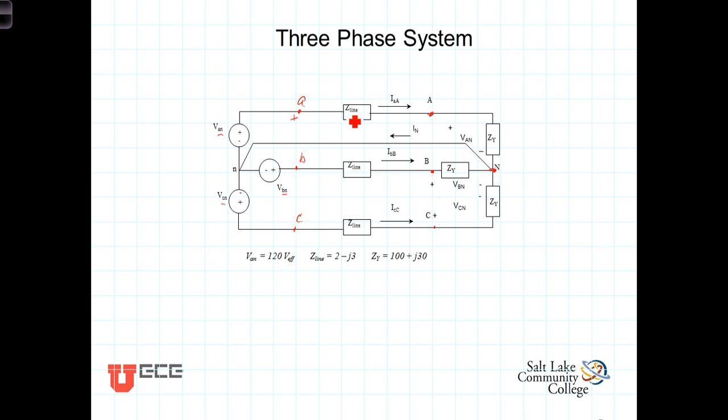The line currents, the currents flowing through the transmission lines, are referred to as I sub little a big A, meaning that is the current flowing from the lowercase a, the source side, to the uppercase A, the load side. Similarly, I sub little b big B and I sub little c big C. Here representing the transmission line impedances—again each of the line impedances will be the same. They're going the same distance, made out of the same materials. Everything in these are the same from phase to phase.